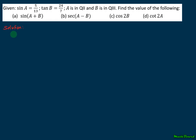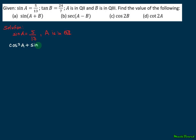The given that we are going to consider is sine A is equal to 5 over 13, and A is in quadrant 2. So we are going to use the Pythagorean identity: cosine squared A plus sine squared A equals 1.